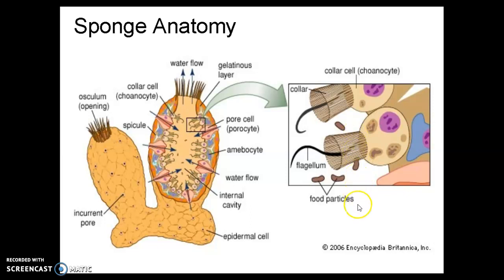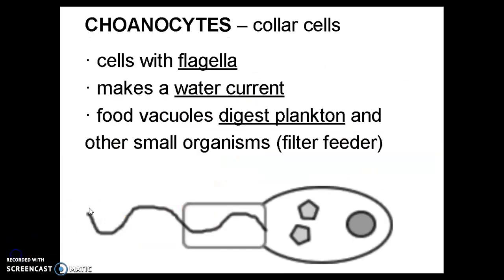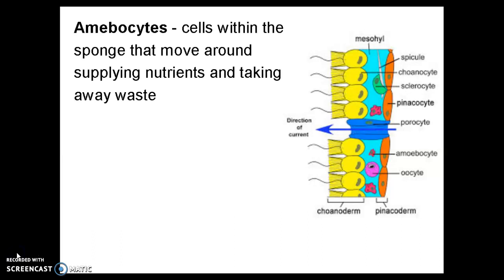They're called collar cells because they have collars on them, and these collars are made of very small and thin fibers. What they do is filter food particles — this is why sponges are filter feeders. As water flows through the sponge, food particles get trapped in this collar, which acts like a sieve to separate food particles from the water. Once the collar on the choanocytes captures the food, food vacuoles in the cell digest it — things like plankton and other small organisms. Finally, we have cells called amoebocytes, which move around and supply nutrients and take away waste, acting almost like the sponge's circulatory system, delivering nutrients from the choanocytes to wherever they're needed throughout the sponge.